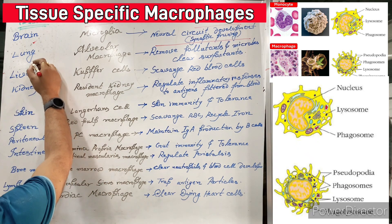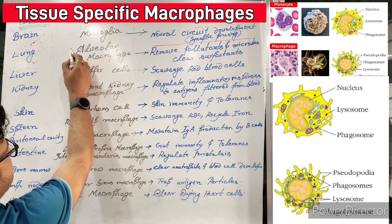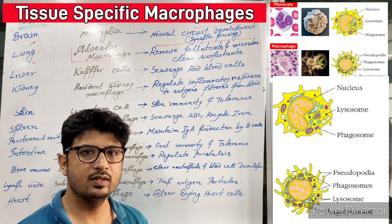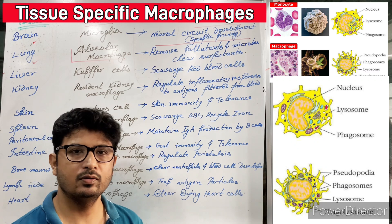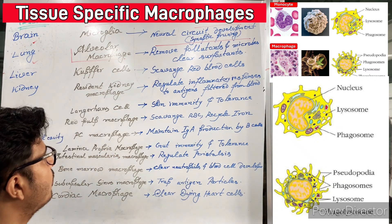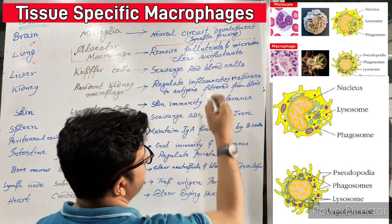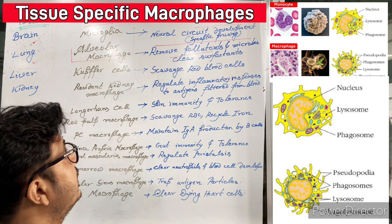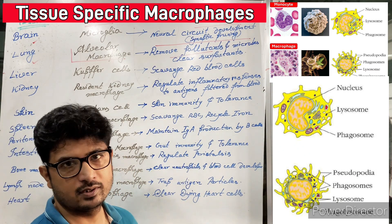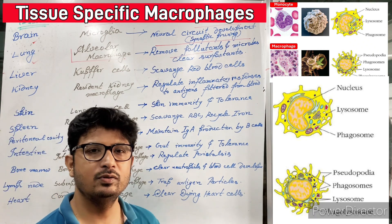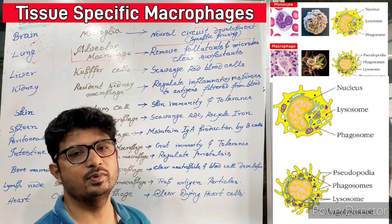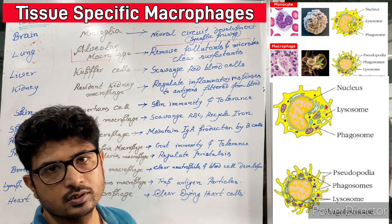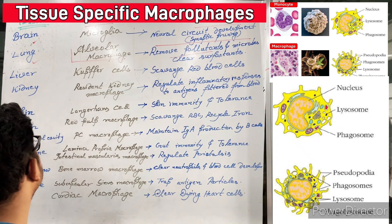Coming to the second one — the lung. The lung specialized macrophages are called alveolar macrophages, named from the alveoli. What do they do? They remove pollutants. We inhale several pollutants through the air, as well as microbes, and they clear surfactants. Anything harmful to our body that is inhaled directly from the air is managed by these alveolar macrophages — they do their job very accurately.